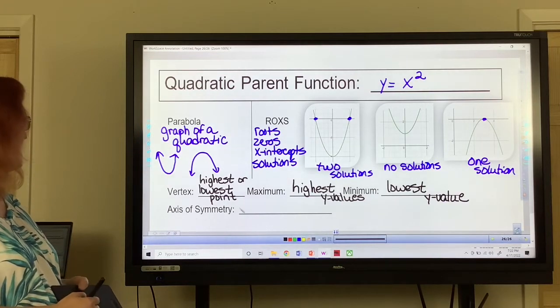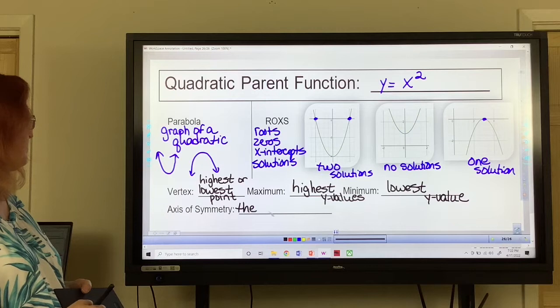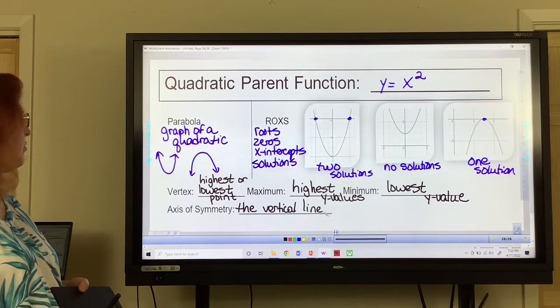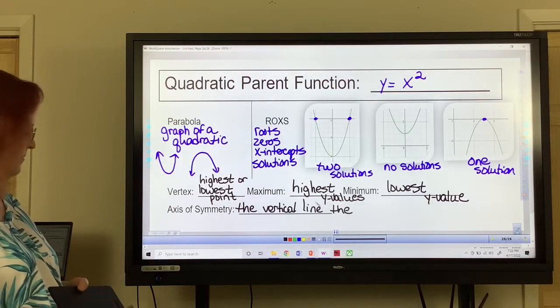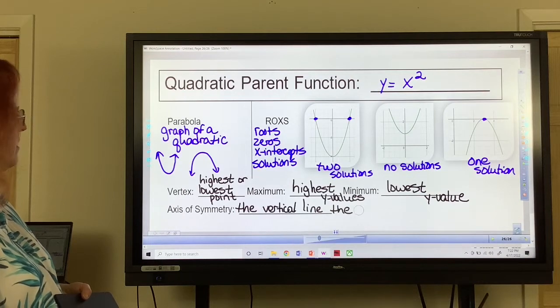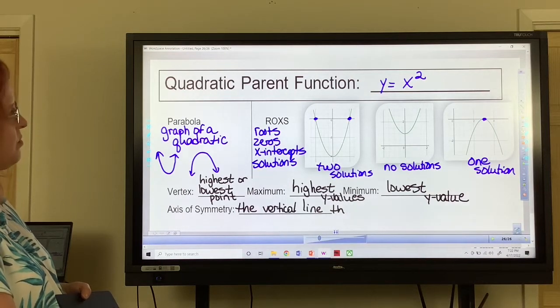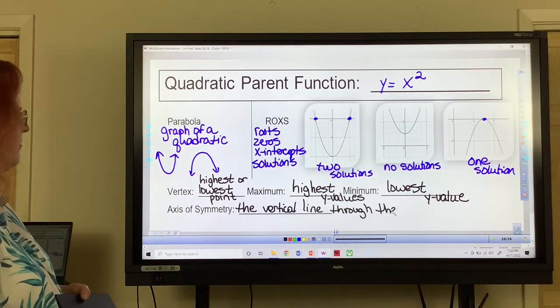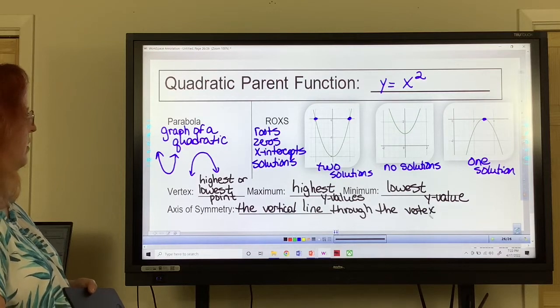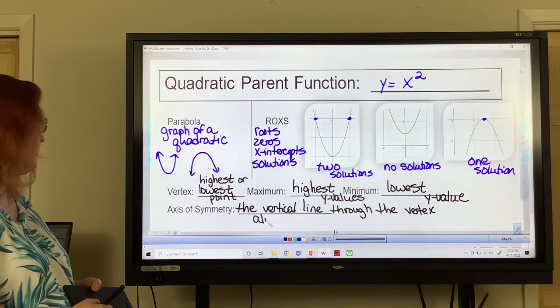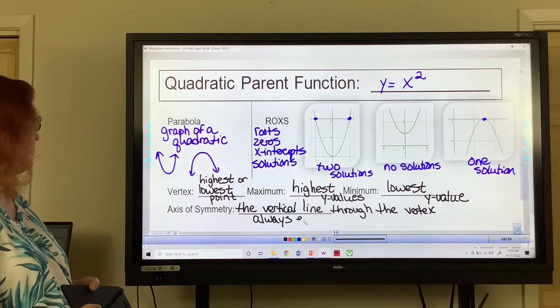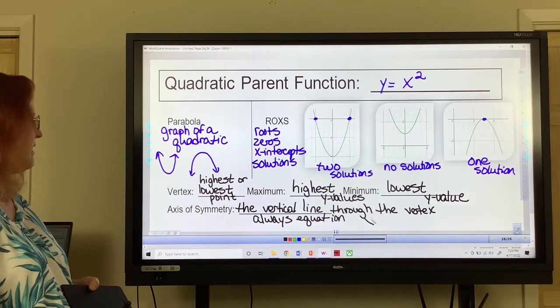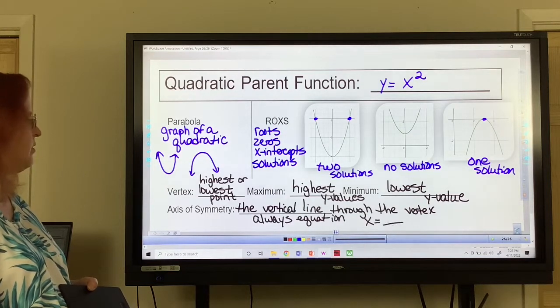Your axis of symmetry. It is the vertical line through the vertex. So it's going to always be an equation, and it's going to be x equals x value of the vertex.